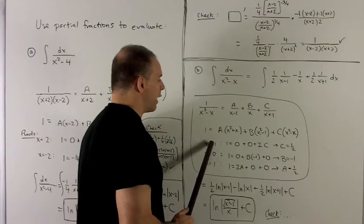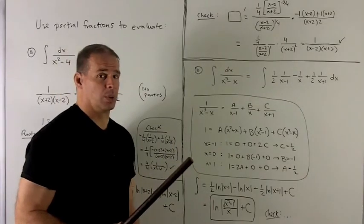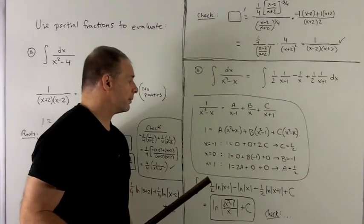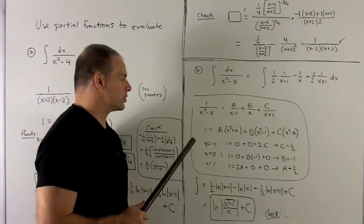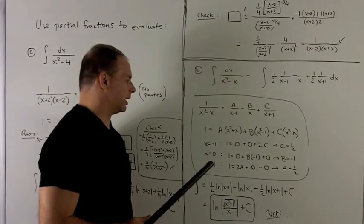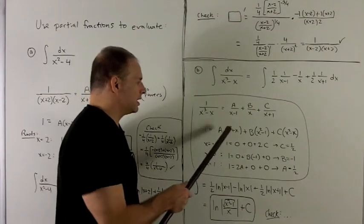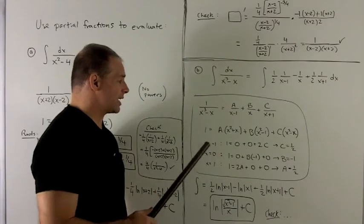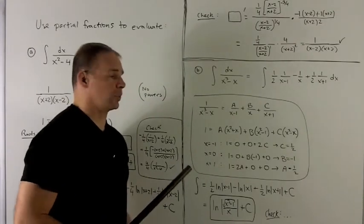If I set x equal to minus 1, I lose the first two terms, which gives me 2C equal to 1, or C is a half. If I put a 0 into each of these, we're going to lose the first and third term, leaving me with a minus B in the middle, or B equal to minus 1. If I put a 1 into each of these, we're going to have a 2A. The last two get lost. And then that's going to be equal to 1, so I have A equal to a half.